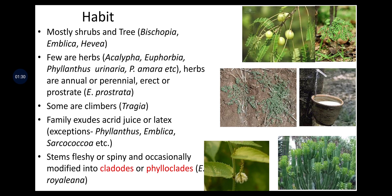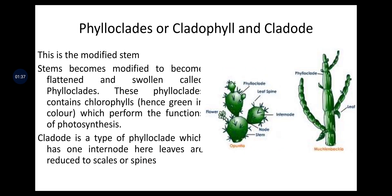Stems are fleshy or spiny and occasionally modified into cladodes or phylloclades. Phylloclade is a cladophyll or cladode — a modification of the stem where the stem becomes flattened and swollen. Phylloclades contain chlorophyll, hence are green and perform photosynthesis. A cladode is a type of phylloclade with only one internode, and leaves are reduced to scales or spines. Phylloclades and cladodes can be used as propagating material in vegetative propagation, which is popular in many forest tree species.